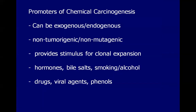Promotion in chemical carcinogenesis can be exogenous or endogenous. Take note that promoters are non-mutagenic and non-tumorigenic — they stimulate cellular proliferation for clonal expansion only as long as that particular cell is already an initiated cell. Examples of promoter agents include hormones, bile salts, smoking, alcohol, drugs, viral agents, and phenols.